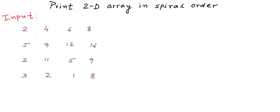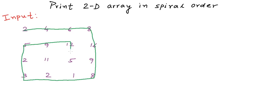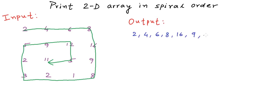We will start at 2 and first traverse the top row going right: 2, 4, 6, 8. Then we go down along the rightmost column, then left along the bottom row, and so on, traversing in spiral order. As output, we print a comma-separated list: 2, 4, 6, 8, 16, 9, 8, 1, 2, 3, 2, 5, 9, 12, 5, and 11.